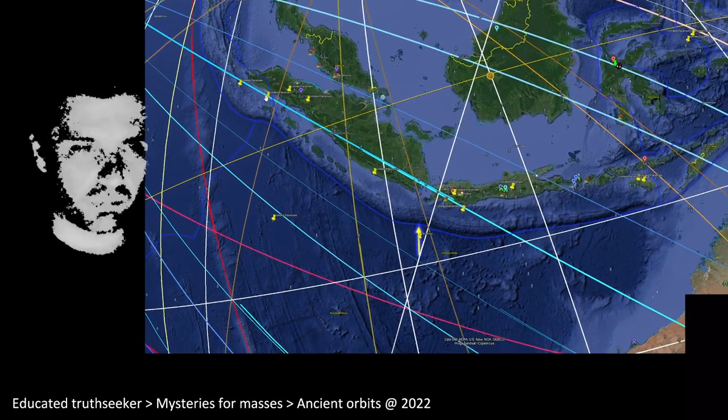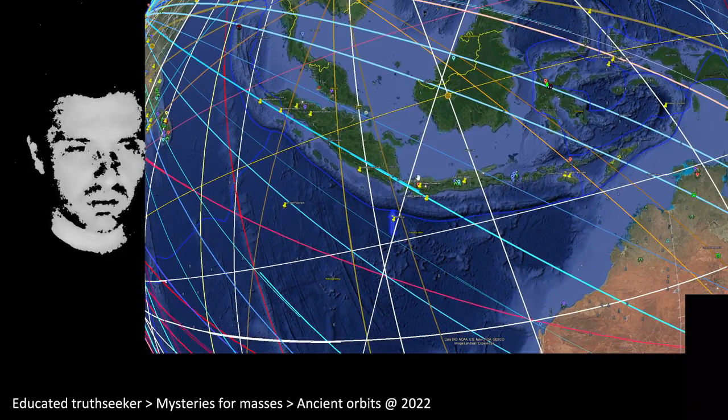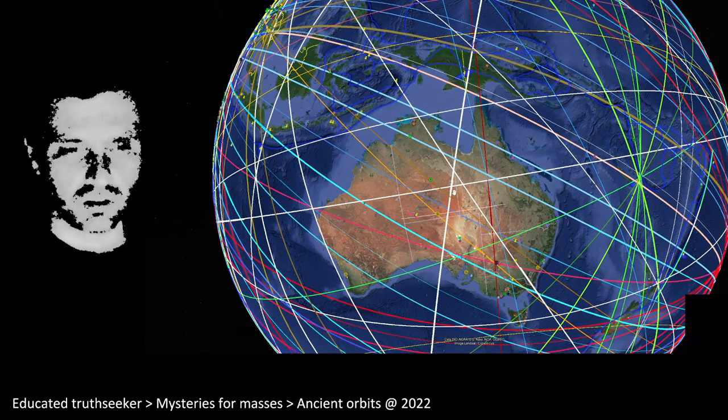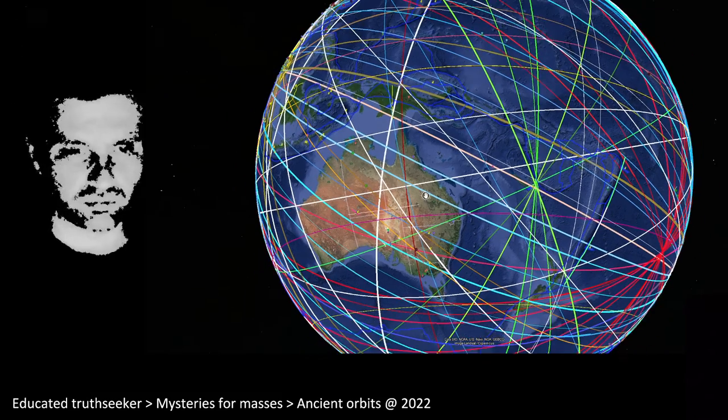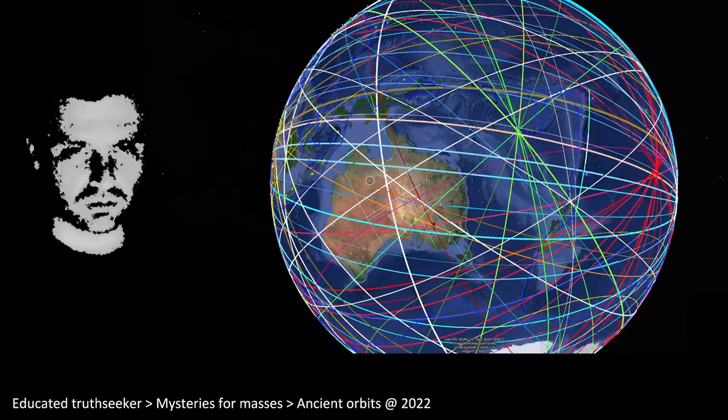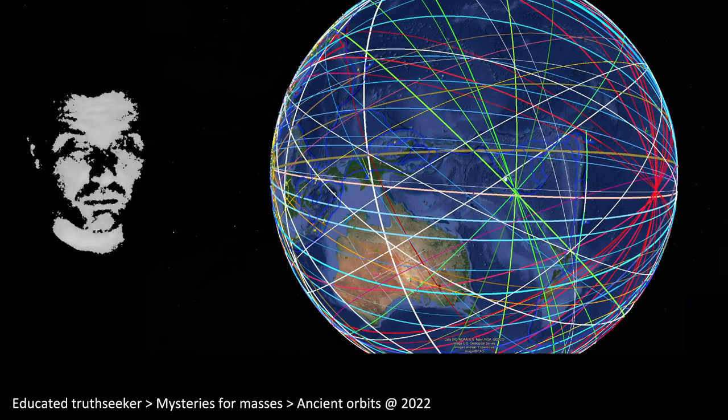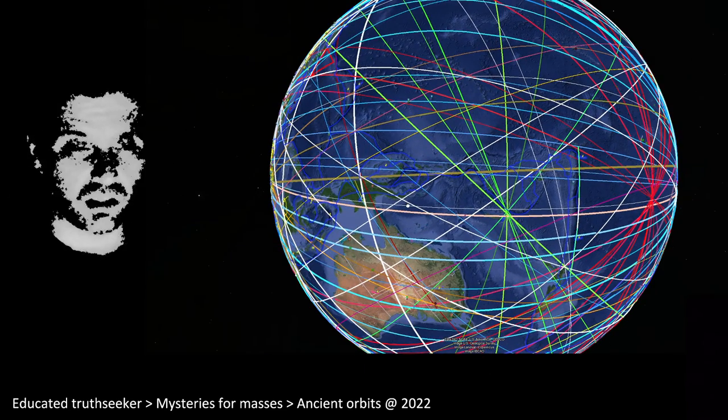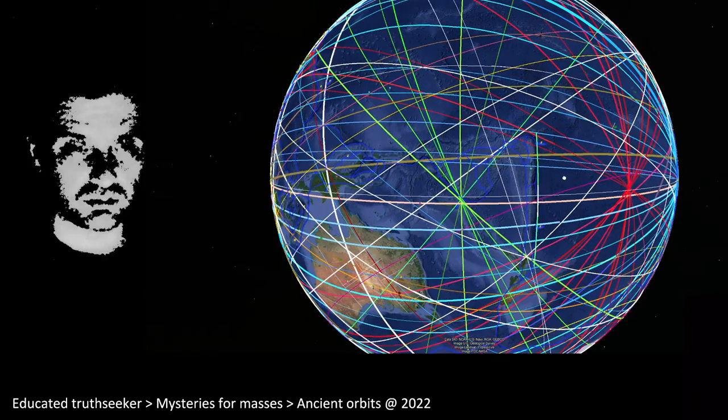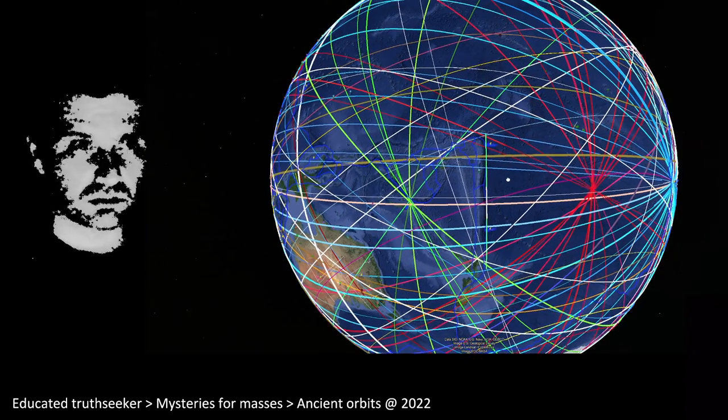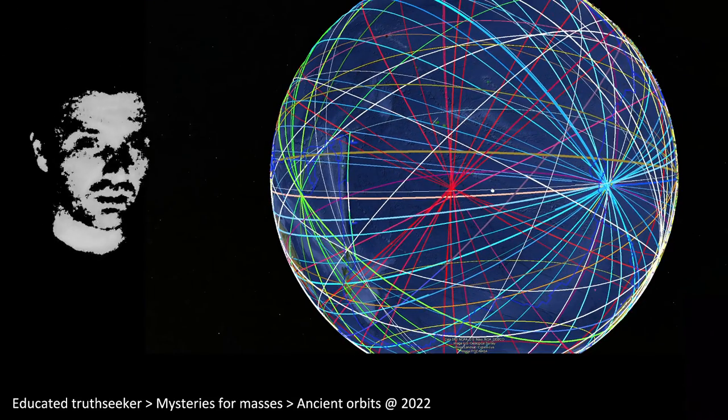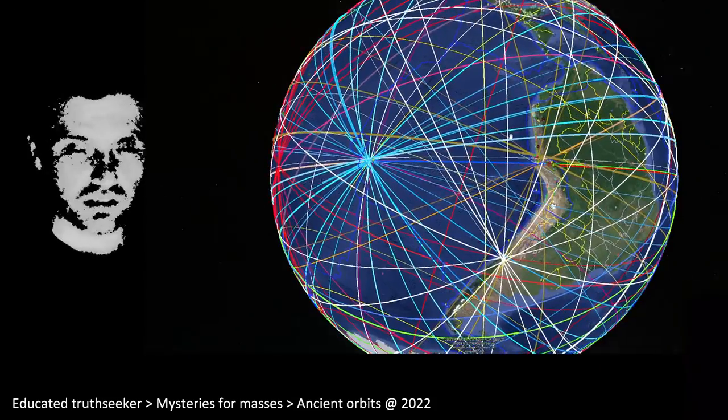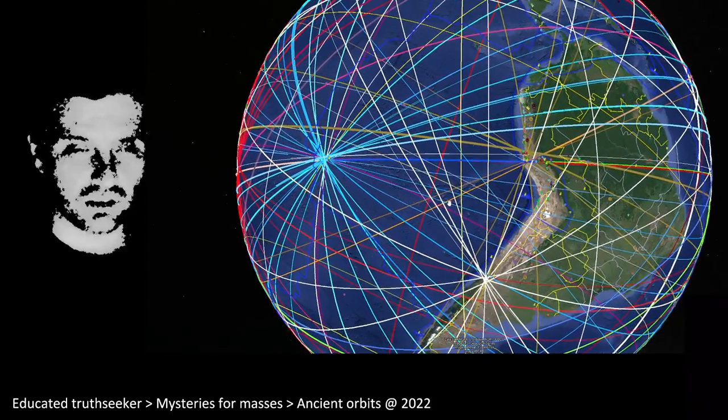And we can see they are shaping the continents. They are parallel with coasts, they are shaping the geography. These orbits were used by gods to travel, to harvest the energy. I can explain it later. Now you can just watch and tell for yourself if this is coincidence or not.